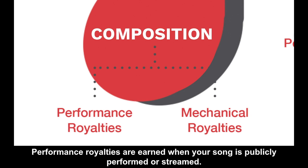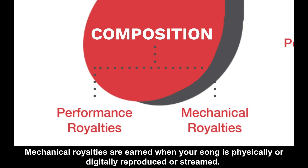Performance royalties are earned when your song is publicly performed or streamed. Mechanical royalties are earned when your song is physically or digitally reproduced or streamed.